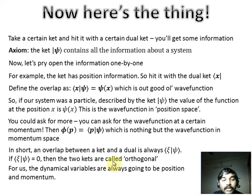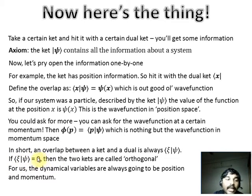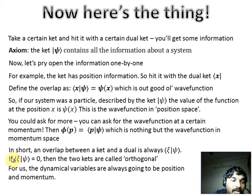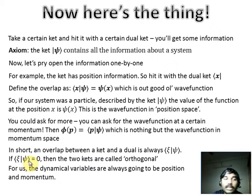Now it might happen that you have ket psi and another ket xi. If you take the bra of xi and hit it on ket psi and get zero, then these two kets are orthogonal — meaning there is no overlap between psi and xi. They are completely independent of each other; one cannot depend on the other at all.